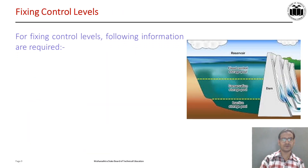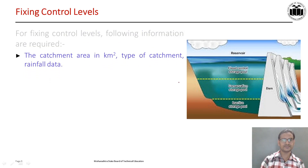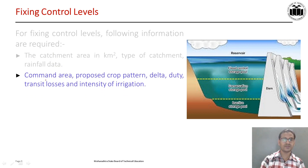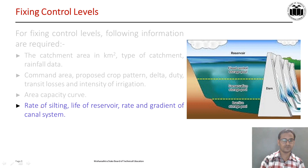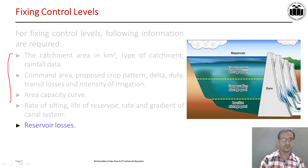Now let us see the information required for fixing the control levels. First is the catchment area — how much area brings the amount of water. Then type of catchment, such as fan-shaped or any other type. Then rainfall data. Then command area — how much area is to be irrigated. Then proposed crop pattern, delta, duty, transit losses, and irrigation intensities. Also required is the area-capacity curve, rate of silting, life of reservoir (100, 150, or 200 years), rate and gradient of the canal system, and finally reservoir losses. This much information is required to design or fix the control levels in the dam.